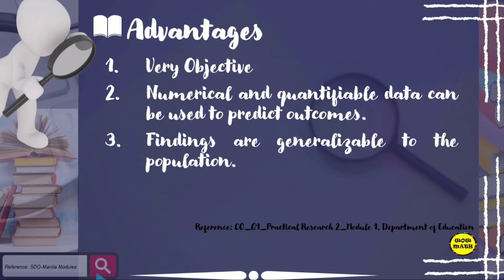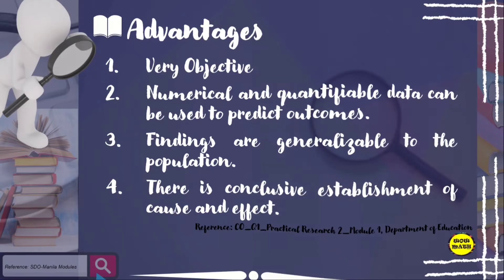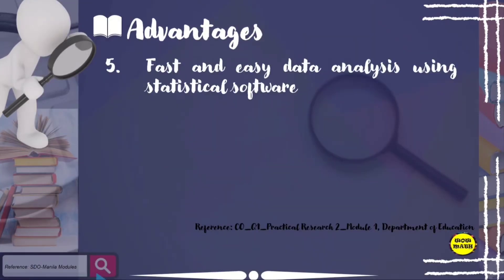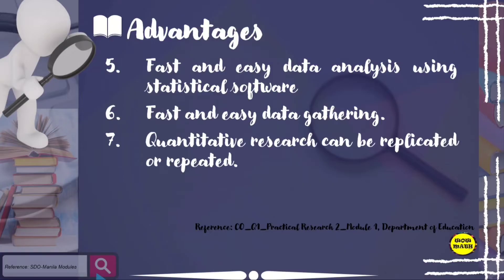Number three: findings are generalizable to the population. Number four: there is conclusive establishment of cause and effect. Number five: fast and easy data analysis using statistical software. Number six: fast and easy data gathering. Number seven: quantitative research can be replicated or repeated.